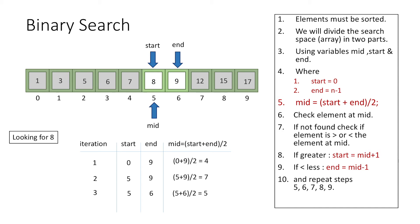We conclude that element 8 is present at index 5, stored in the mid variable. With just 3 iterations we found element 8, whereas linear search would have taken 6 iterations from index 0 to 5.